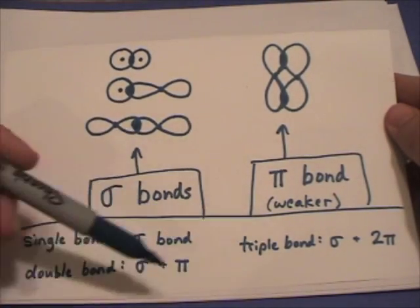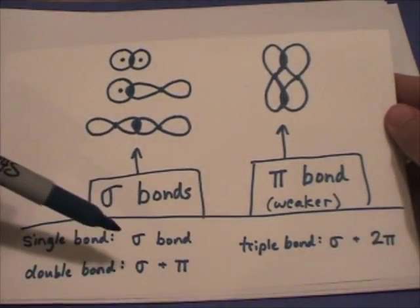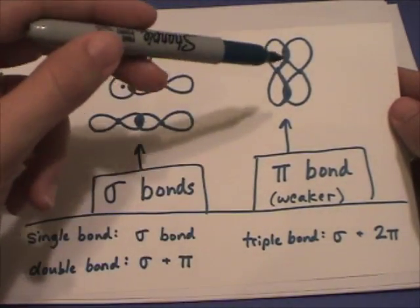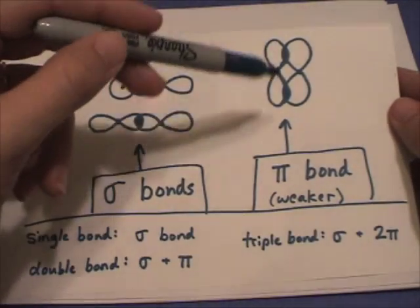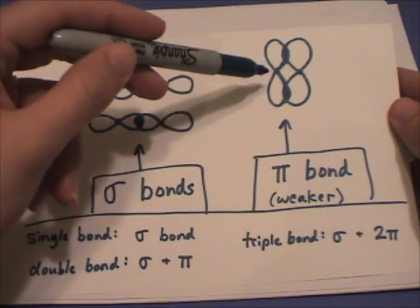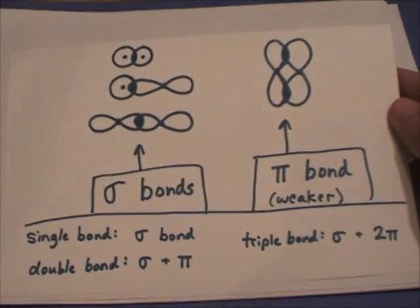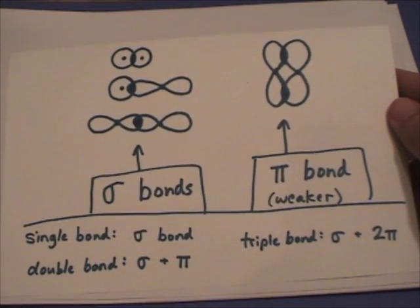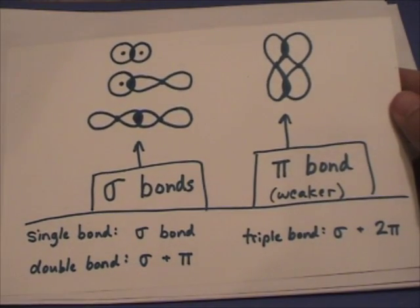A triple bond is stronger than a double bond but not three times as strong as a single bond. So you just remember that, oh yeah, the pi bond is not as strong as a sigma bond. It overlaps not directly between those positively charged nuclei. So that makes sense. It's weaker. So yeah, a triple bond is stronger but not three times as strong as a single bond. So those are the different types of bonding.